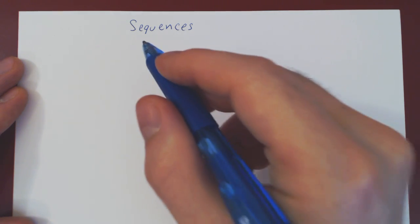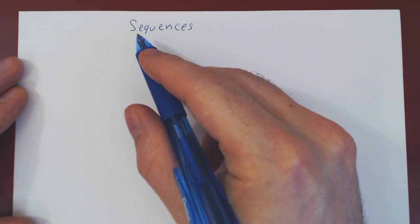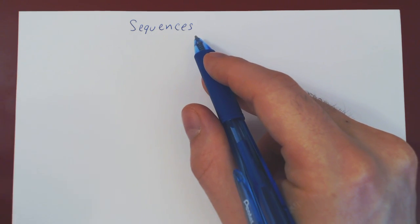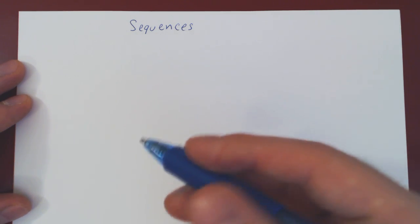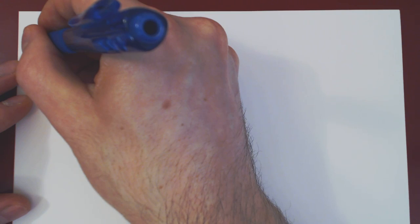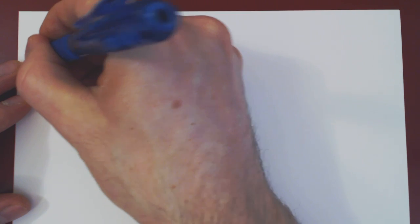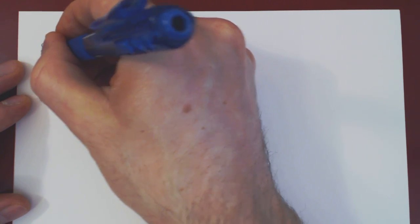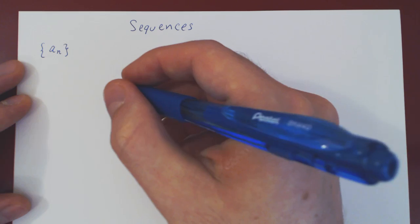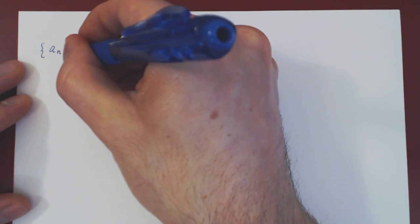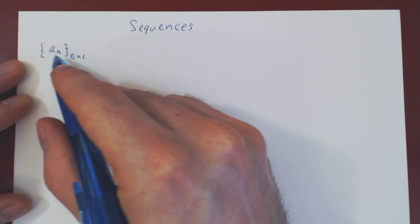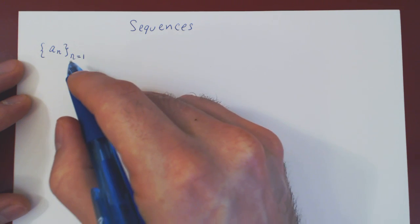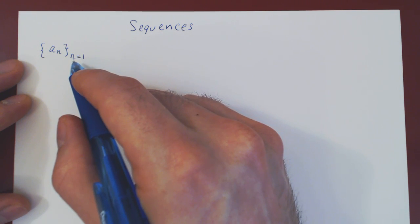In this video, we will introduce the notion of sequences. A sequence is simply an infinite list of real numbers. Here's the usual notation: we use curly brackets, write a subscript n, and n begins at 1 — the first term of our sequence, a_1 — and n ranges over all positive integers.